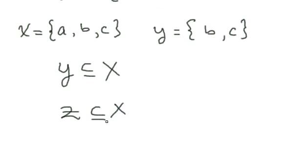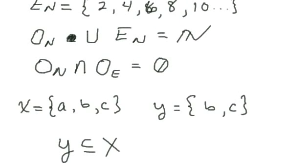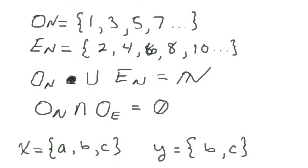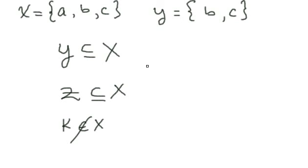So we've looked at finite sets, infinite sets, subsets, and proper subsets. One more example: is K an element of X? No — we write that with a crossed-out membership symbol. But C is an element of X.